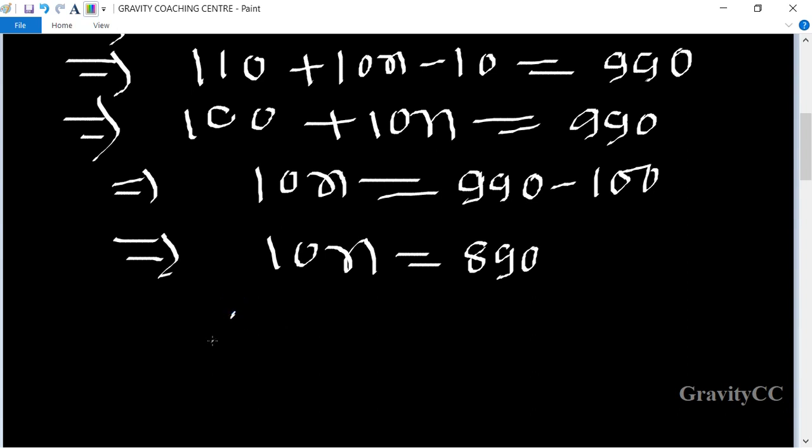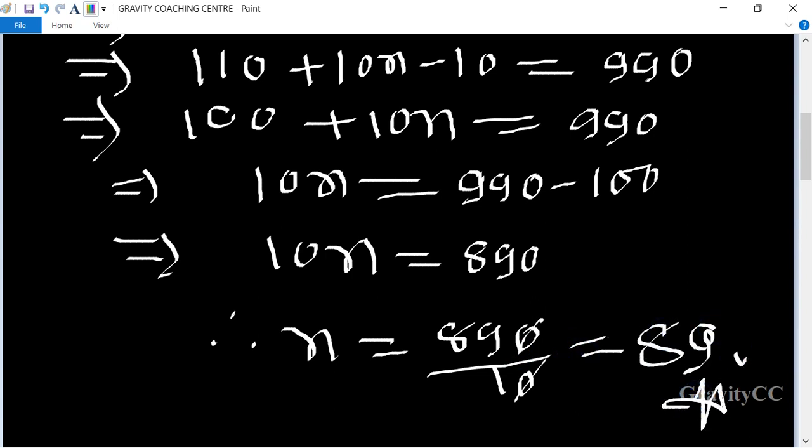Therefore, n equals 890 upon 10. So canceling the zeros, equals 89, which is the required answer.